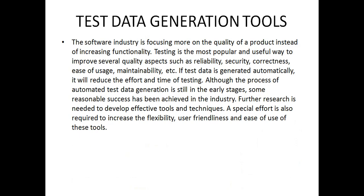Software industries are focusing more on quality products instead of just increasing functionality, because test data is one of the most powerful tools to improve the overall quality of the software product based on factors such as reliability, security, correctness, ease of use, and maintainability. Test data is generated automatically to reduce the efforts of time and money. Although the process of automated test data generation is in an early stage, some reasonable progress has been achieved by the industry. Further research is needed to develop effective tools, and special efforts are required to increase the feasibility, user-friendliness, and engineering quality of these tools. Thank you so much.